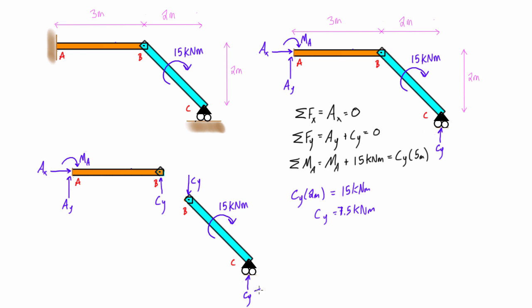Awesome, so we can even label that on here if we want, just to help. So this is 7.5 kilonewtons, not kilonewton meters, what am I talking about? It's a force magnitude, it's kilonewtons. This Cy here is 7.5 kilonewtons, so that means this guy here also equal and opposite, 7.5 kilonewtons.